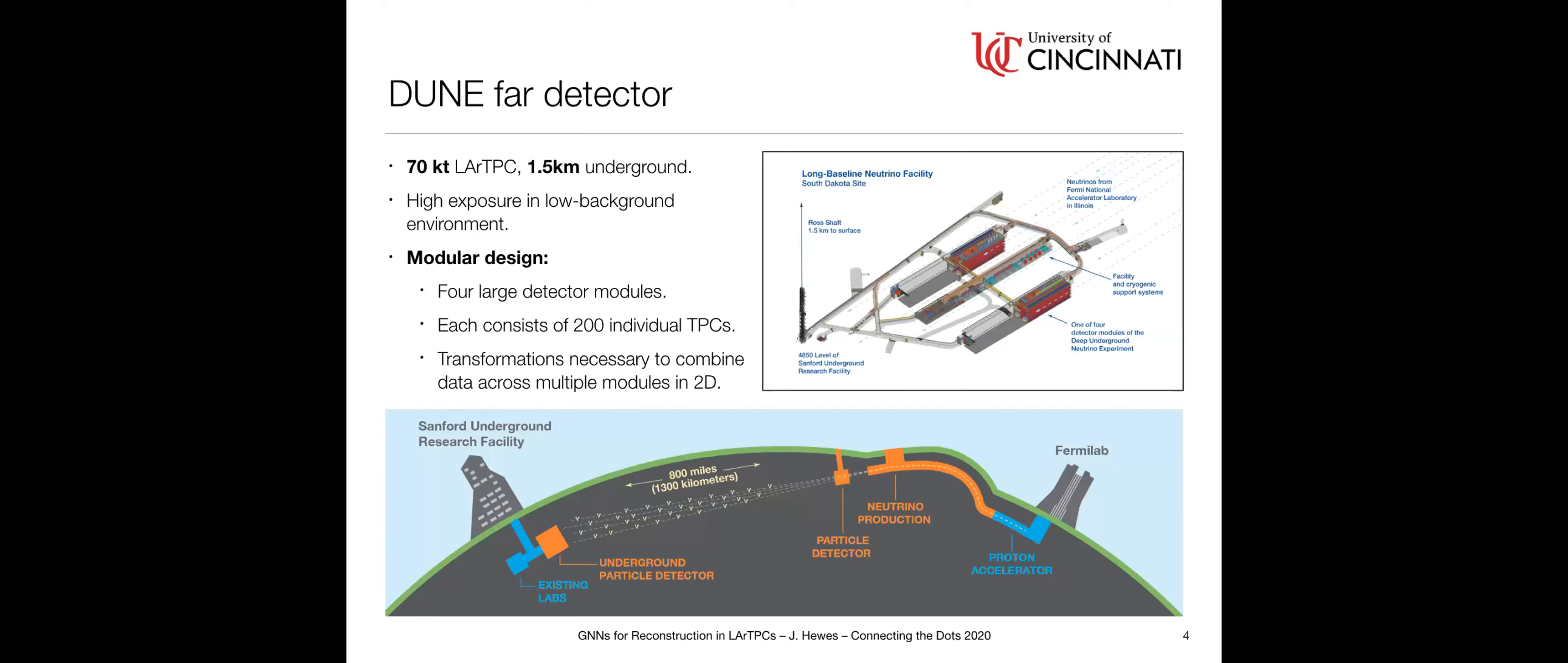In terms of DUNE specifically, it's a 70,000 ton liquid argon time projection chamber being constructed at Sanford Lab in South Dakota, 1.5 kilometers underground. It's in a very low background environment, and just because of the mass of the detector, there's a very high exposure. In neutrino physics, the primary hurdle is that the interaction cross section of a neutrino is very low, so the statistics we're gathering are very small. We want to maximize the size of our detector because that increases the number of events that we see. This detector is modular. You have four large detector modules. Each one is 200 individual TPCs. You can basically transform the image from each individual TPC to combine these smaller modules into a much larger image.